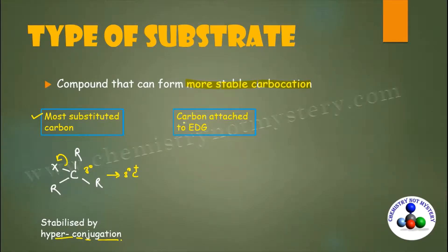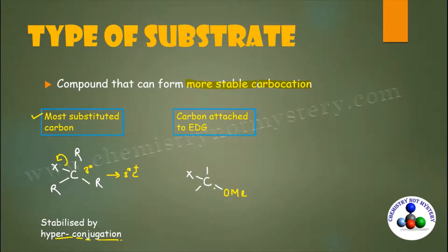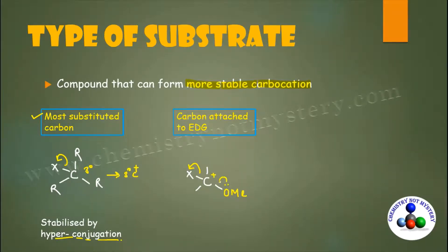The next category is where the reactive carbon is directly bonded to an electron-donating group. For example, if this carbon is bonded with OMe, once the leaving group leaves, the formed carbocation gets stabilized by the +M effect of this group. That's why such molecules prefer SN1.